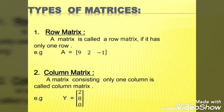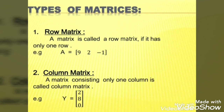Then comes the next type: the column matrix. A matrix is called a column matrix if it has only one column. You can see that matrix Y has 3 rows and only one column, so that matrix is a column matrix.